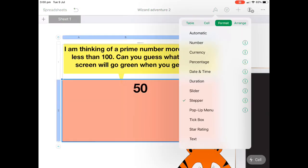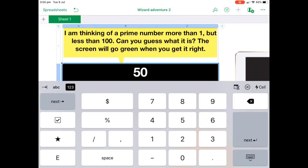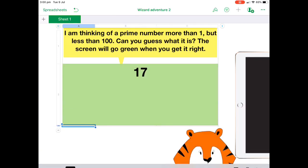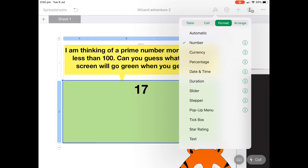So kids can start to think about the user, the UI and how functional it is for young kids. You might want them to actually just type in the number instead, is another way of doing it. And that's just by tapping on the cell and going to format.